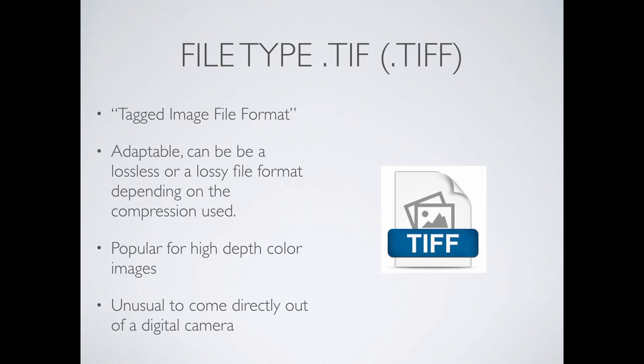A TIFF image is a little bit in between — we can have lossless or lossy compression depending on how it's set up, but it's generally reserved for really big images. If we had an HDR image that was tone-mapped — meaning a high dynamic range image where three images have been combined into one — we're getting one very large image with a lot of information that would typically be saved as a TIFF.